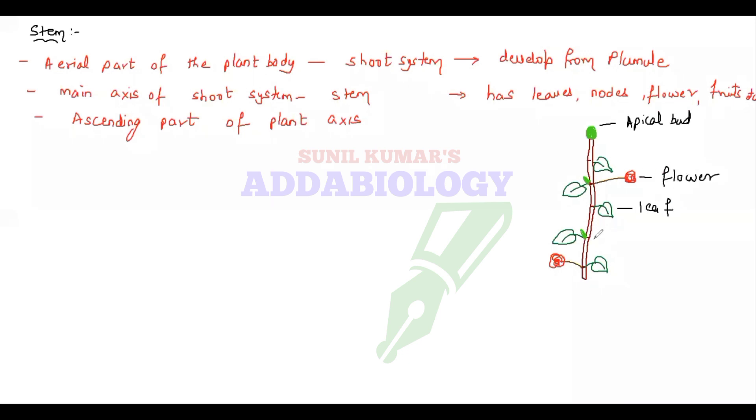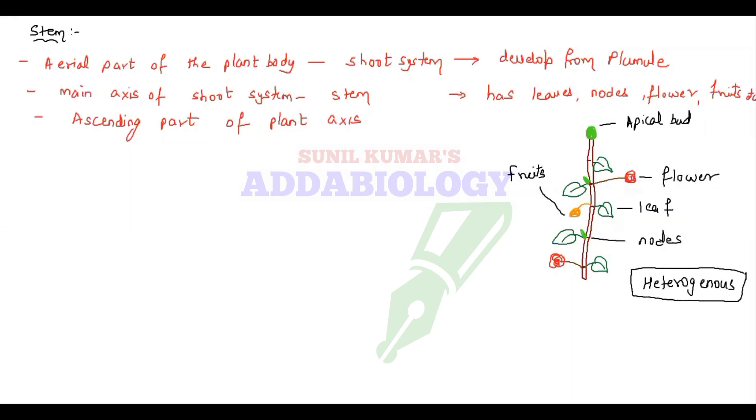The topmost is the apical bud, then there is a flower, leaf, fruits — that's why we say it is heterogeneous. Now let us look at the characteristics of stem.